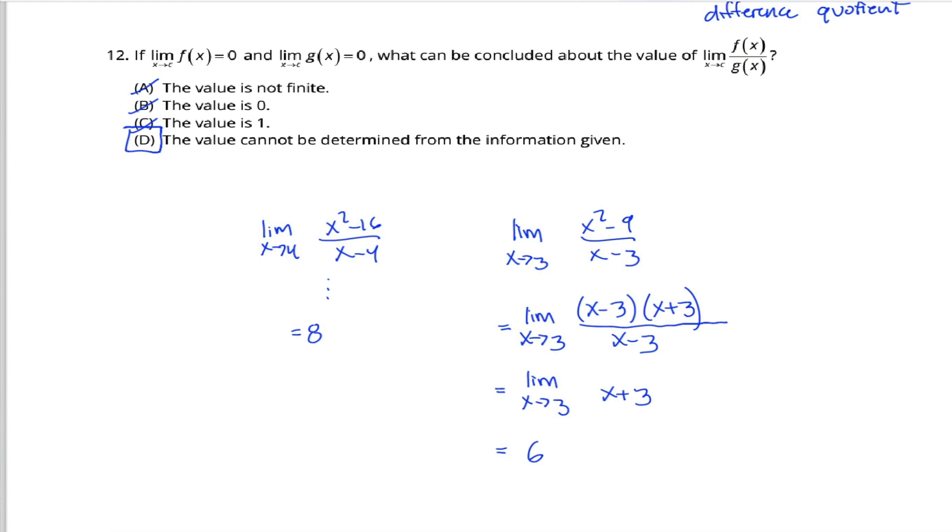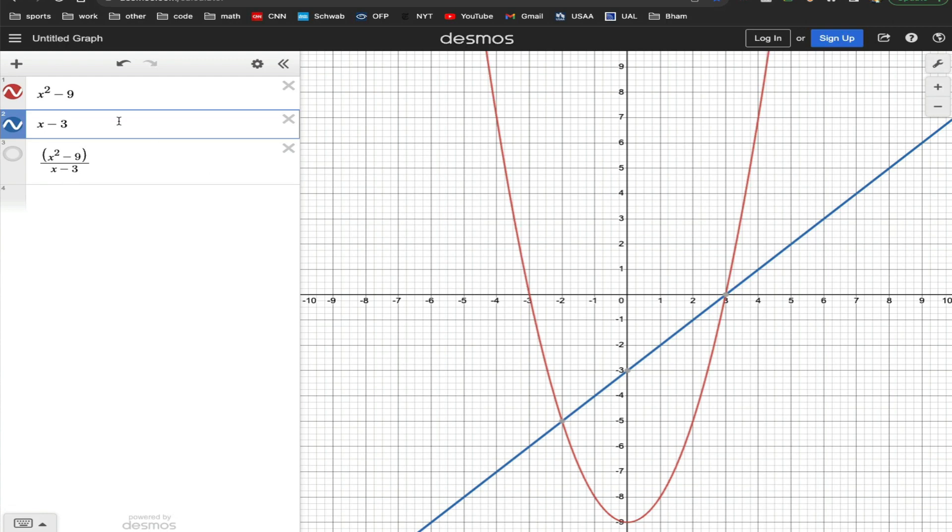I mean, not to get too deep into this, but really what's going on here is our numerator x squared minus 9 is this parabola shown in red. As the x value gets close to 3, the y value gets close to 0. Our denominator x minus 3 is shown in blue, and the same thing happens there.